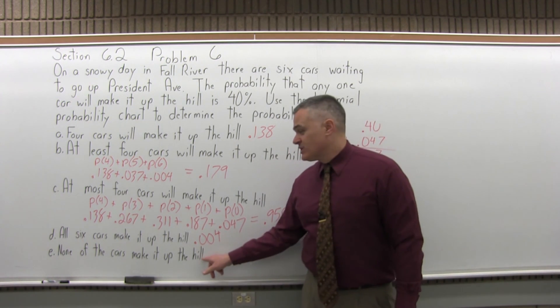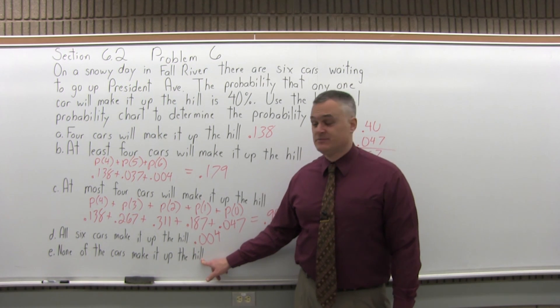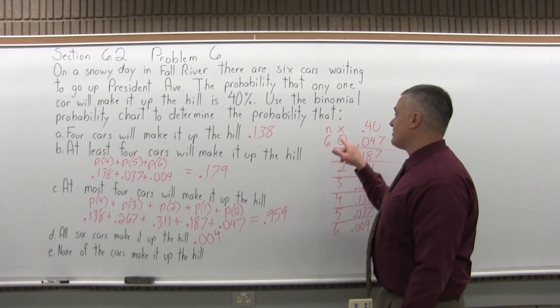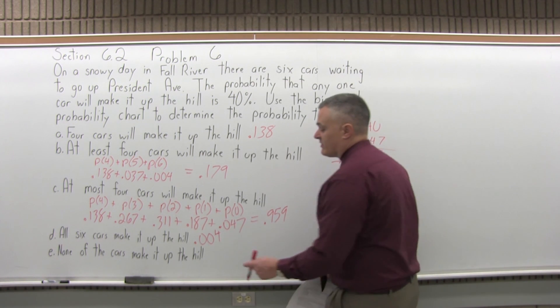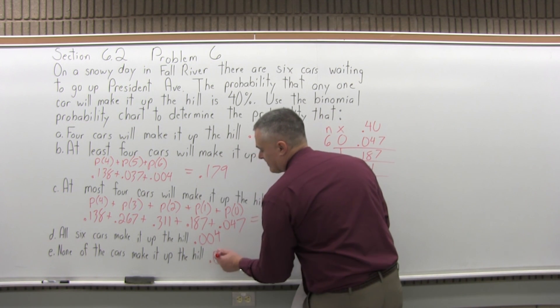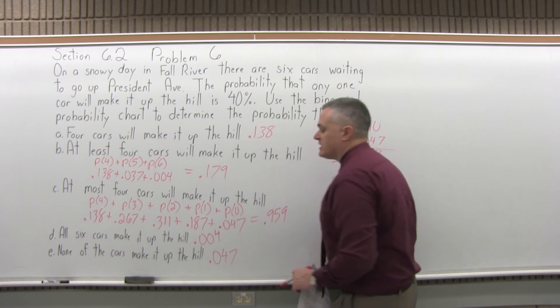Finally, the last one, what's the probability that none of them make it up the hill? None of them making it up the hill means zero cars make it up the hill, and I have .047 for that. That's a little less than a five percent probability.